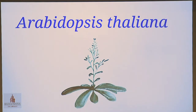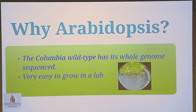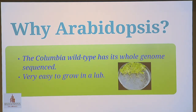I work on a plant known as Arabidopsis thaliana — it's almost like a cousin to the mustard plant. A lot of people probably wonder why I work on Arabidopsis. We have a Columbia wild type which has its entire genome sequenced, so we're able to find the genes that we want to study. It's also extremely easy to grow in a lab — I grow all my plants on a little petri dish. As you can see, we did infect these with the nematodes and there are little knots on them.